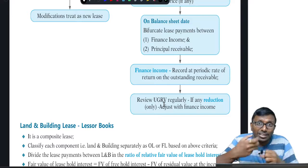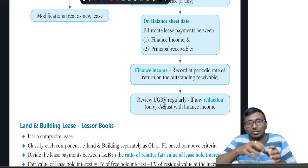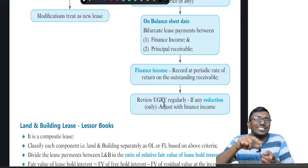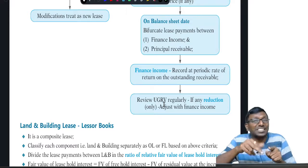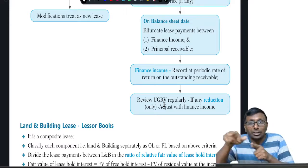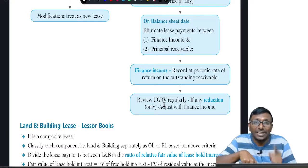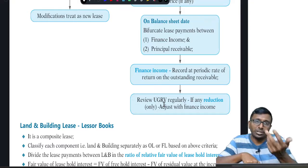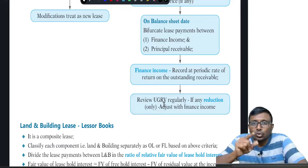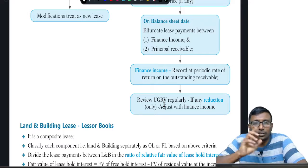UGRV is supposed to be regularly reviewed. Initially you may expect 20,000 — it may go up to 25,000 or come down to 15,000. If there is an increase, you can ignore it. But if there is a decrease, in the year your expectation changes, the present value of that change has to be adjusted with respect to interest income only. To understand this, you should do one sum — refer to the Ind AS Made Easy book for a good example.